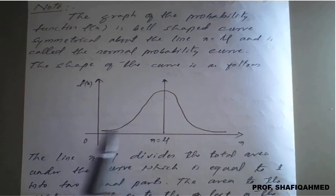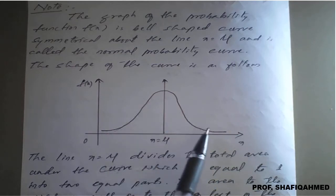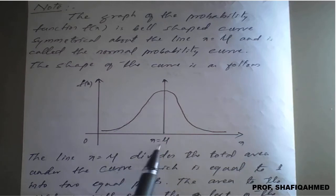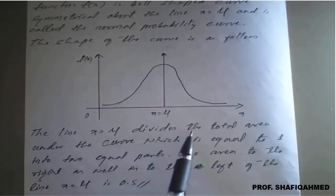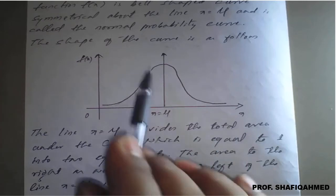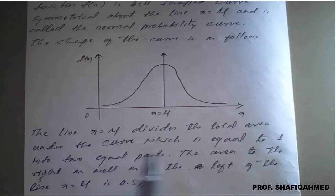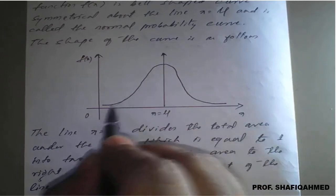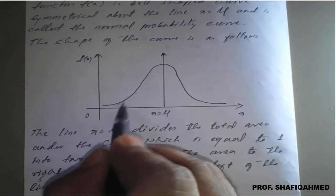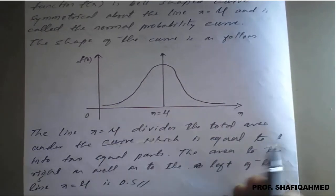This is nothing but a bell shape, and the equation of this curve is x is equal to mu. The line x equal to mu divides the total area — this curve divides the total area into two parts, part 1 and part 2, in equal parts. The complete area of this bell shape is always equal to 1.